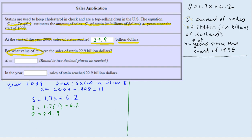They're giving us sales of statin in billions of dollars, which is what our S represents. So we're given that S equals 22.9, and we want to find X that's associated with that value.